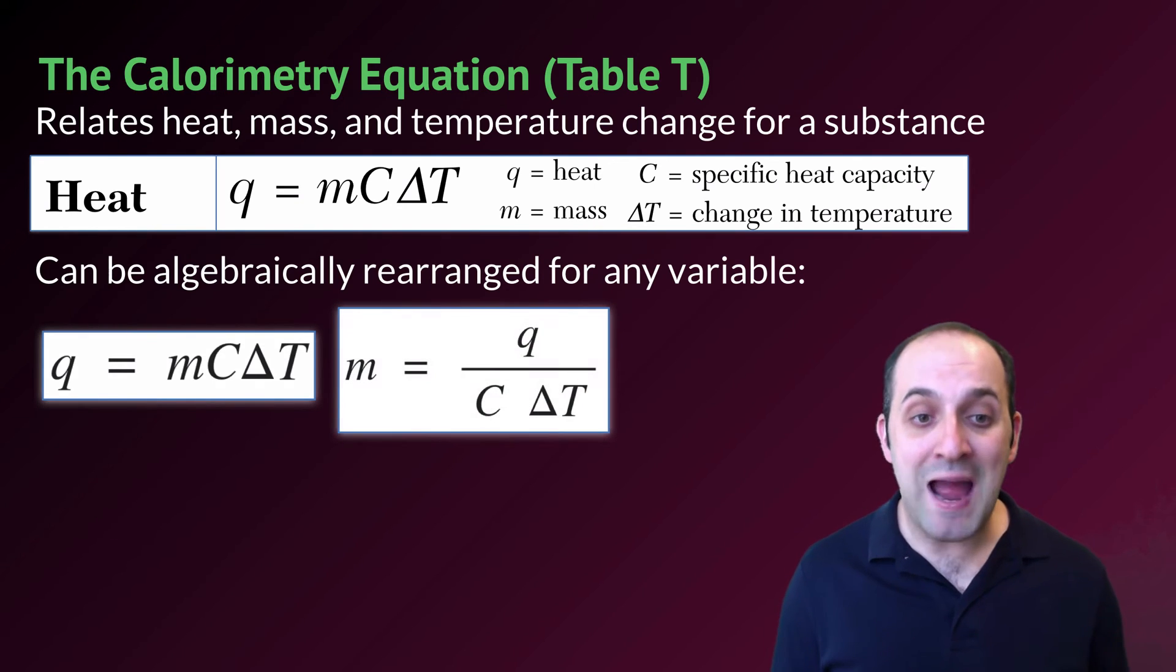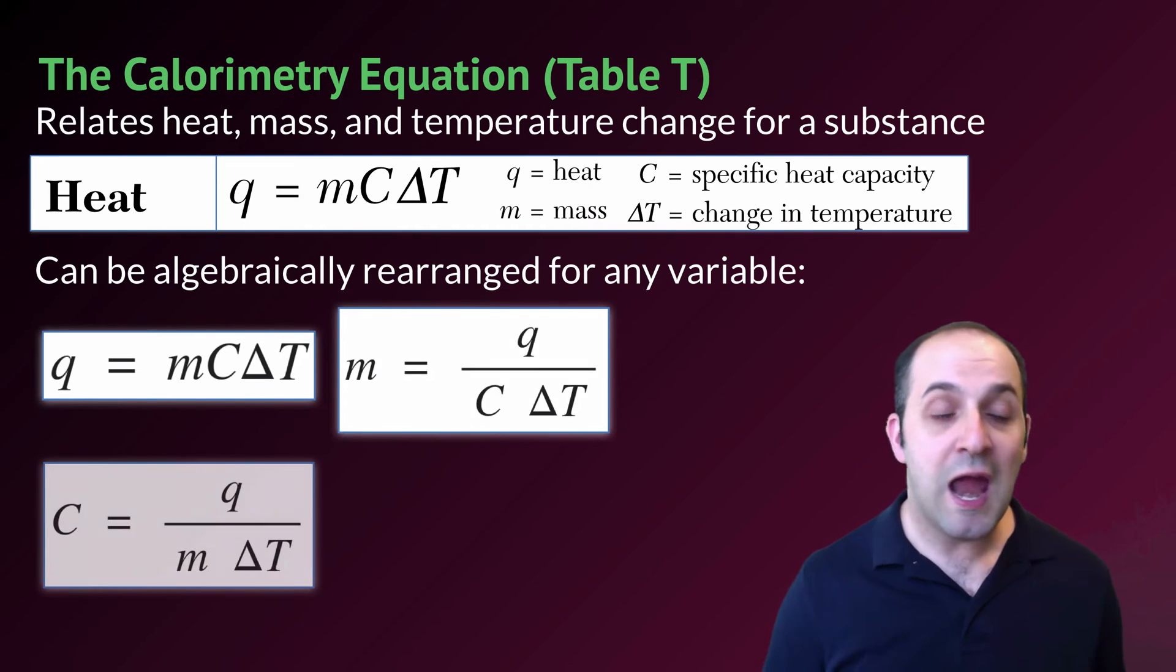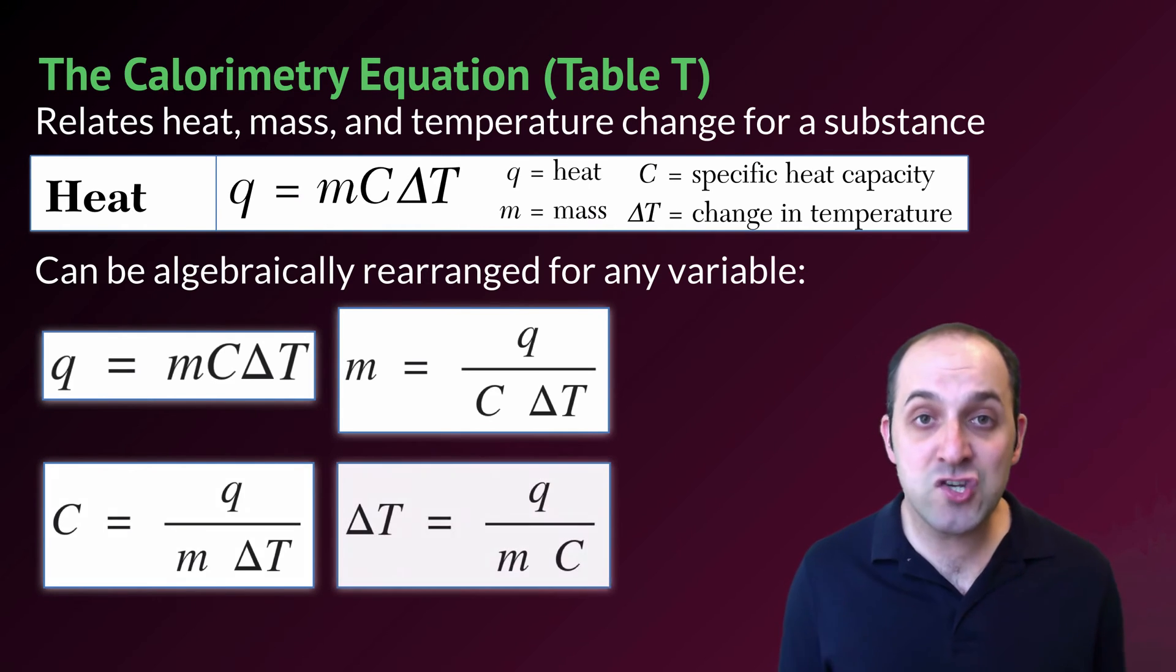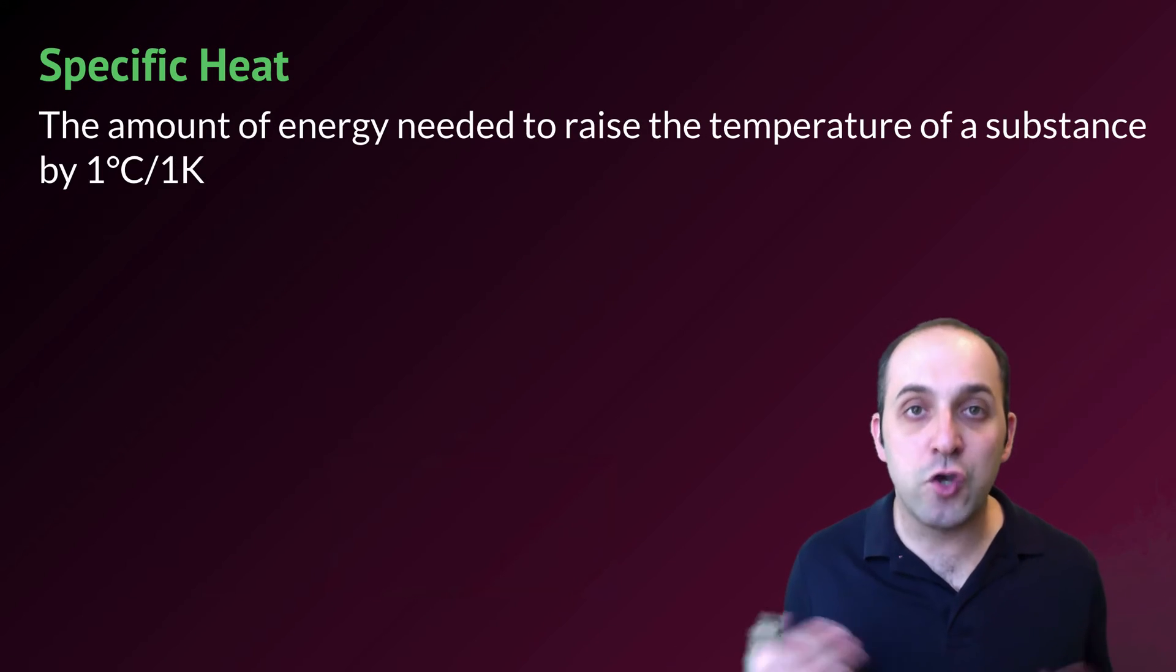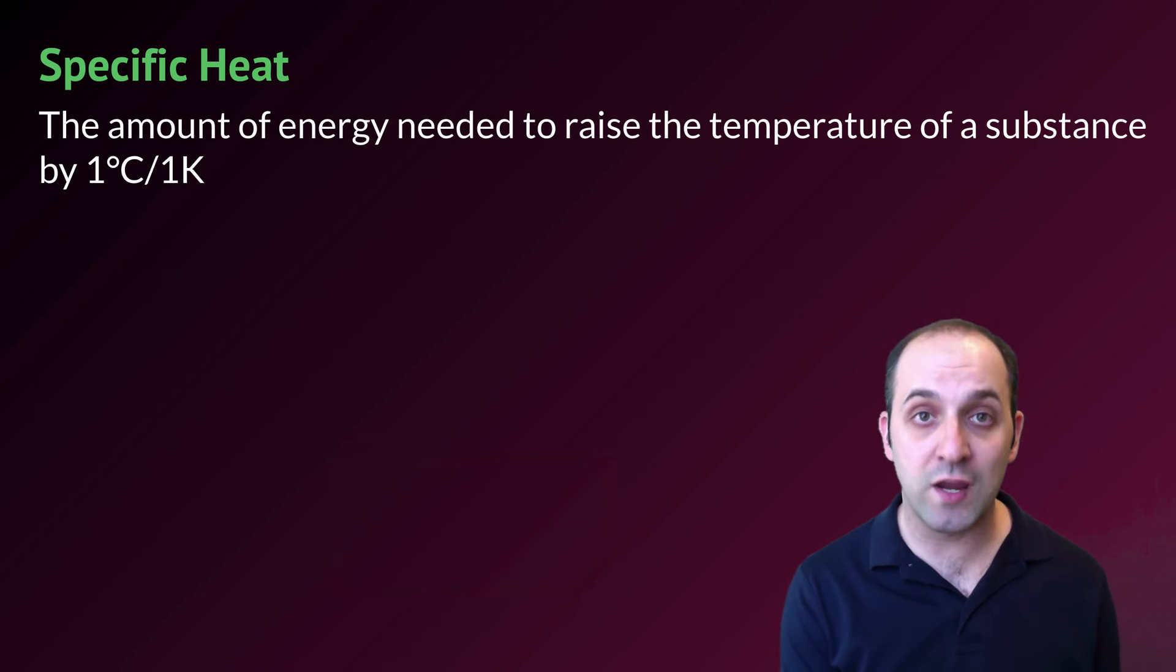So Q or heat is equal to mass times a specific heat times the change in temperature. In the same way, the mass is going to be equal to the heat divided by the specific heat times the change in temperature. And the specific heat is going to be equal to the heat divided by the mass times the change in temperature. And the change in temperature is going to be equal to the heat divided by the mass times the specific heat. Specific heat is a new thing for us. It's the amount of energy needed to raise the temperature of a substance by one degree Celsius or one degree Kelvin.